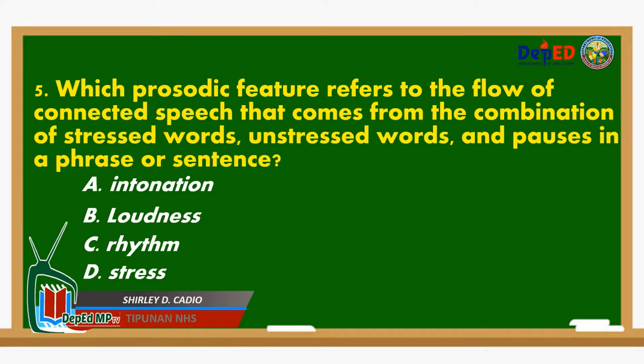Number 5. Which prosodic feature refers to the flow of connected speech that comes from the combination of stressed or unstressed words and pauses in a phrase or sentence? A. Intonation. B. Loudness. C. Rhythm. D. Stress.